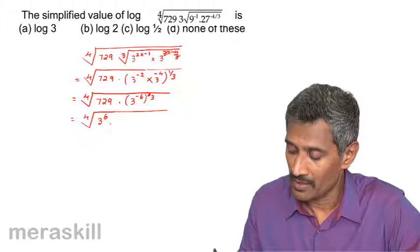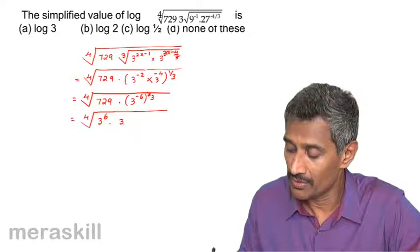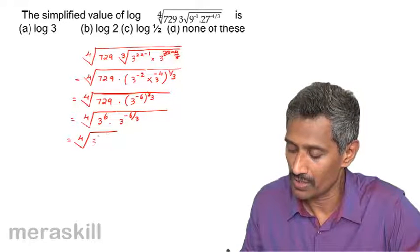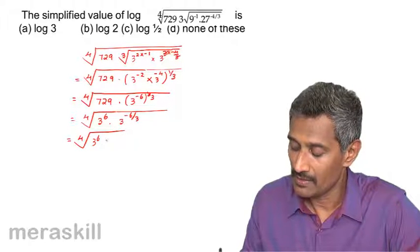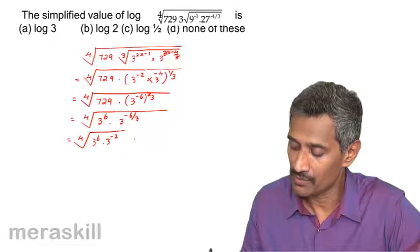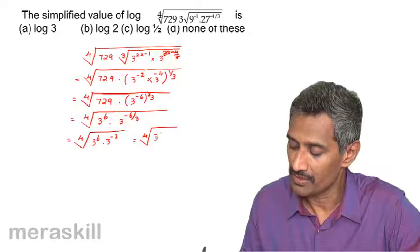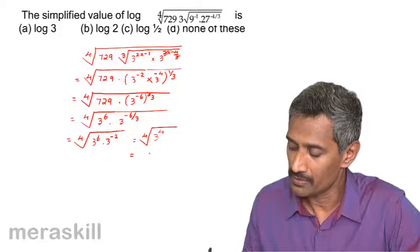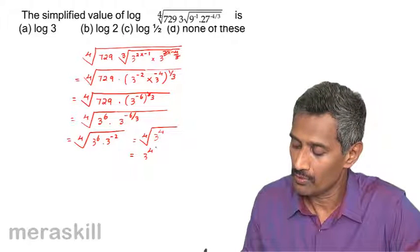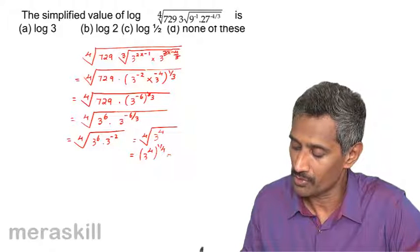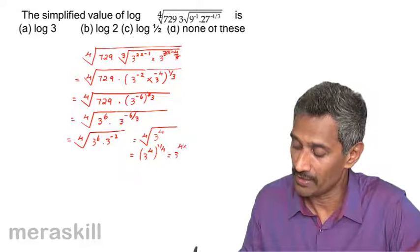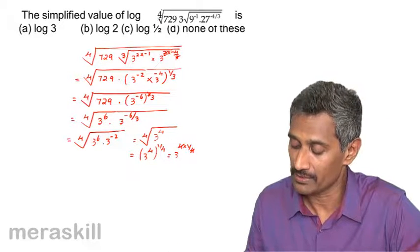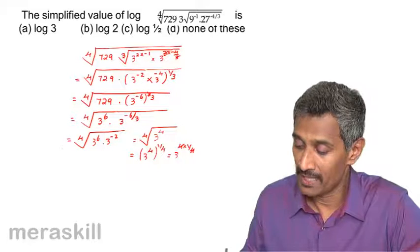This is going to be the fourth root of 3 raised to 6 into 3 raised to minus 6 by 3, which becomes the fourth root of 3 raised to 6 minus 2, which is 4. So we have 3 raised to 4, the whole raised to 1 by 4, which gives 3 raised to 4 times 1 by 4, which is simply 3.